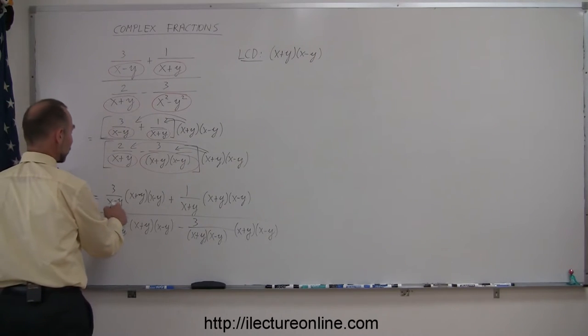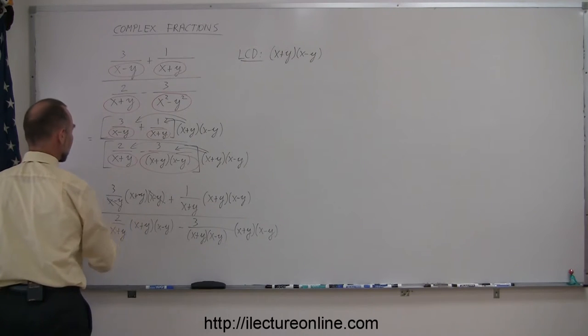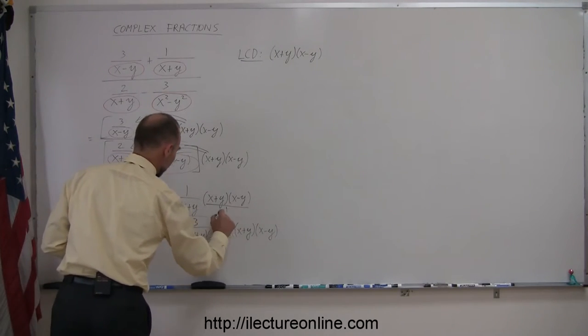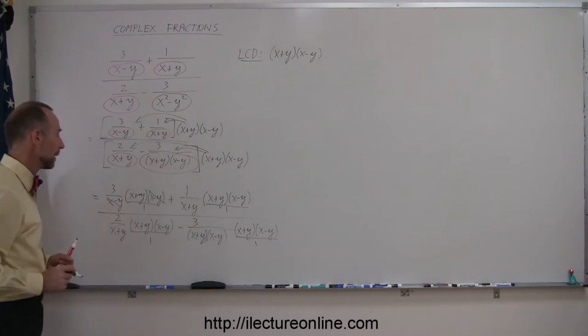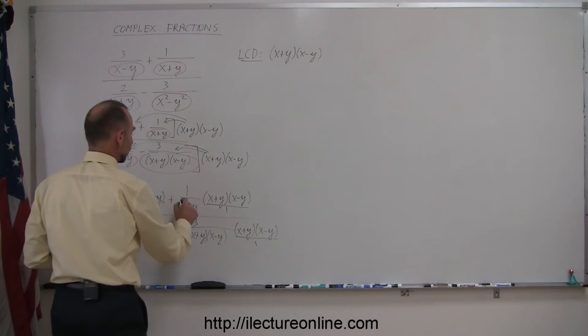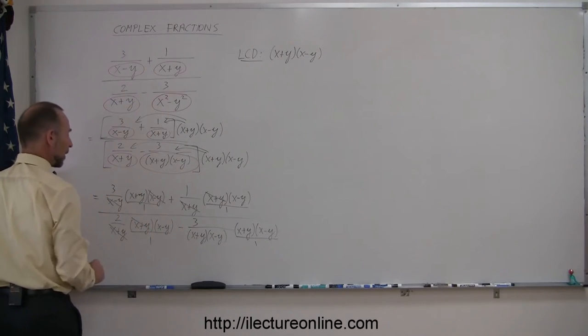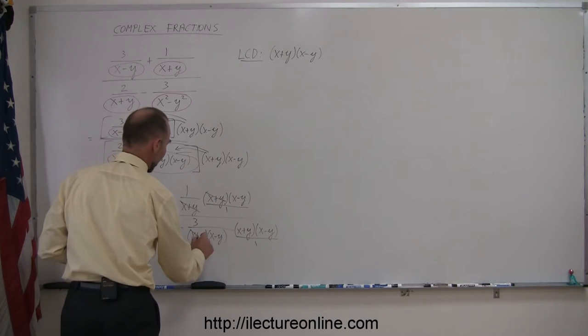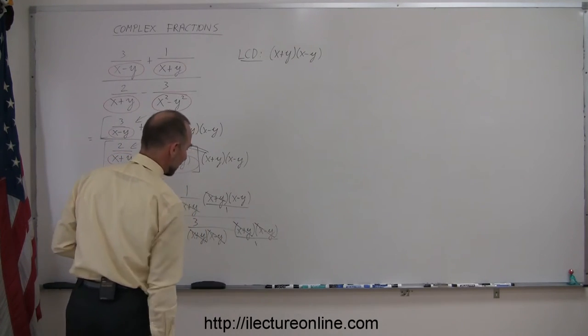Now we can go ahead and simplify things. Notice that we have an x minus y, an x minus y here, so they cancel out, because that's in the numerator, that's in the denominator. We can think of this as over 1 to make it a little simpler. And then here we can say that this x plus y cancel out this x plus y, here this x plus y cancel out that x plus y, and here we realize that x plus y cancels out x plus y, and x minus y cancels out x minus y.